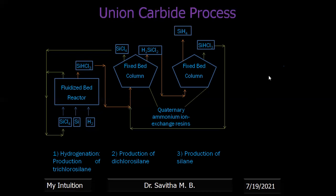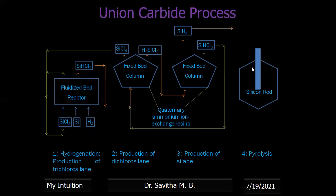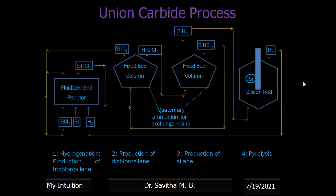The silane (SiH4) then undergoes pyrolysis, the fourth and final step. In pyrolysis, silane is subjected to very high temperature in the presence of a silicon rod. The silane splits into silicon and hydrogen. This silicon is solar grade silicon. The hydrogen gas produced is recycled back to the first chamber, since the first step also requires hydrogen.